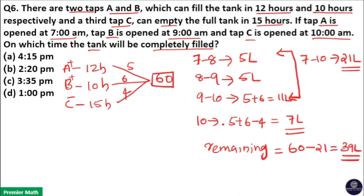So, here from 10am onwards, 7 liters filling. And the remaining is 39 liters after 10am. So, time taken to fill 39 liters is 39 by 7.